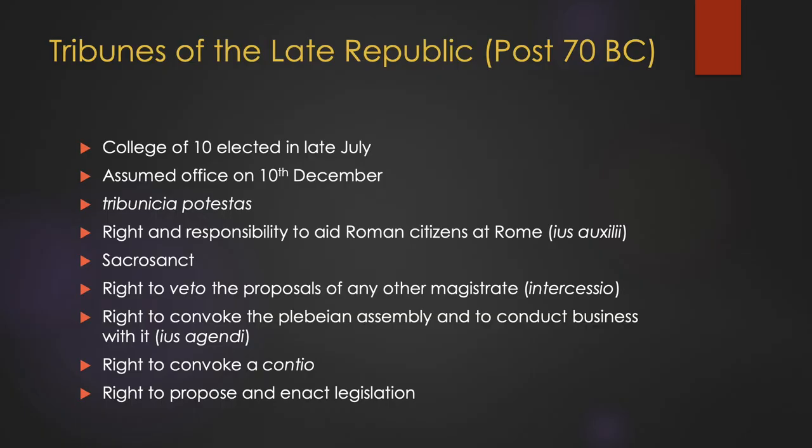So what kinds of powers did these representatives have? Let's take a look at Tribunicia Potestas in the late Roman Republic. Tribunes of the Plebs were elected in July. From this point onwards, they became Tribunes Designate and could begin or continue to draft proposals for legislation until they entered into office on the 10th of December. By this time, Tribunicia Potestas allowed them a wide range of capabilities.